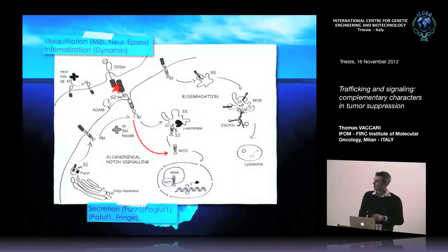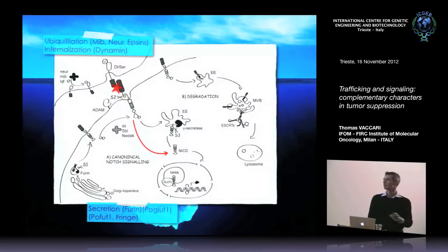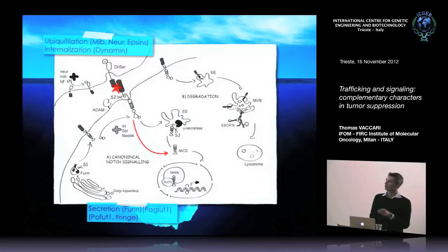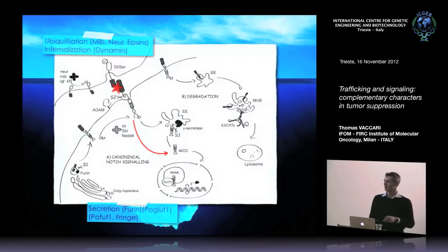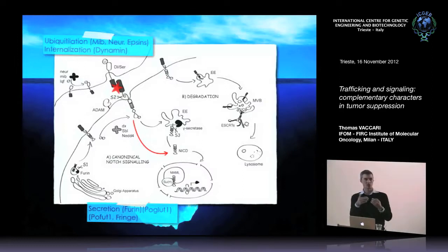Another important aspect is secretion: the receptor needs to be furin-cleaved to be presented as a heterodimer, and various sugar modifications on the extracellular side make it competent for binding ligands. Some sugar modifiers like Fringe are very important because they bias the ability of the receptor to bind different ligands, which has been shown to be critical in certain signaling contexts.